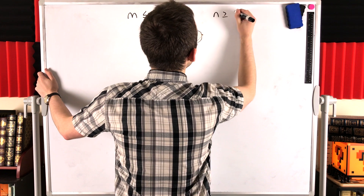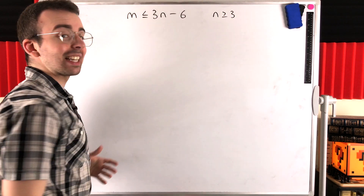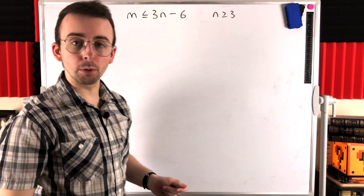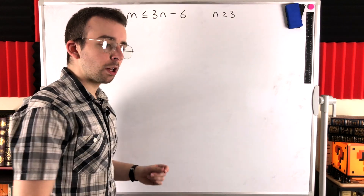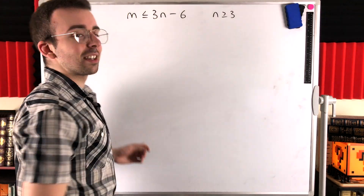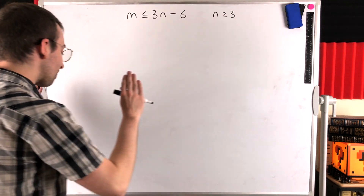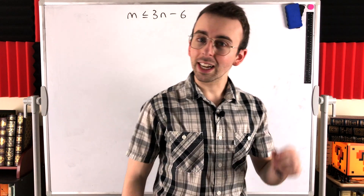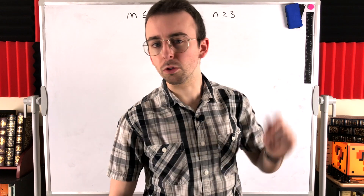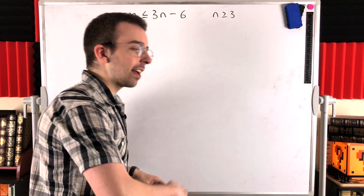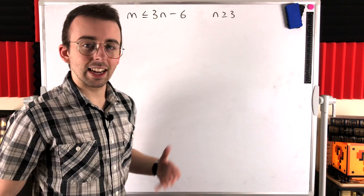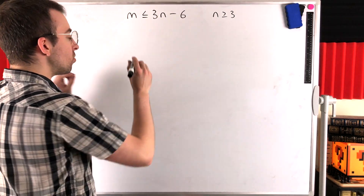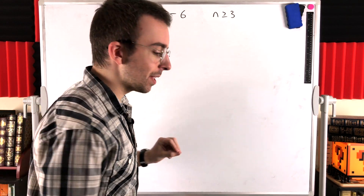N has to be greater than or equal to three — the graph must have at least three vertices. For N equals two the result isn't true, and for smaller N values the statement doesn't really make any sense. What we're going to do first is prove this result for connected graphs, so we can use Euler's formula, and then at the end we'll quickly extend it to disconnected graphs. But before that, we just want to prove it for one particular graph.